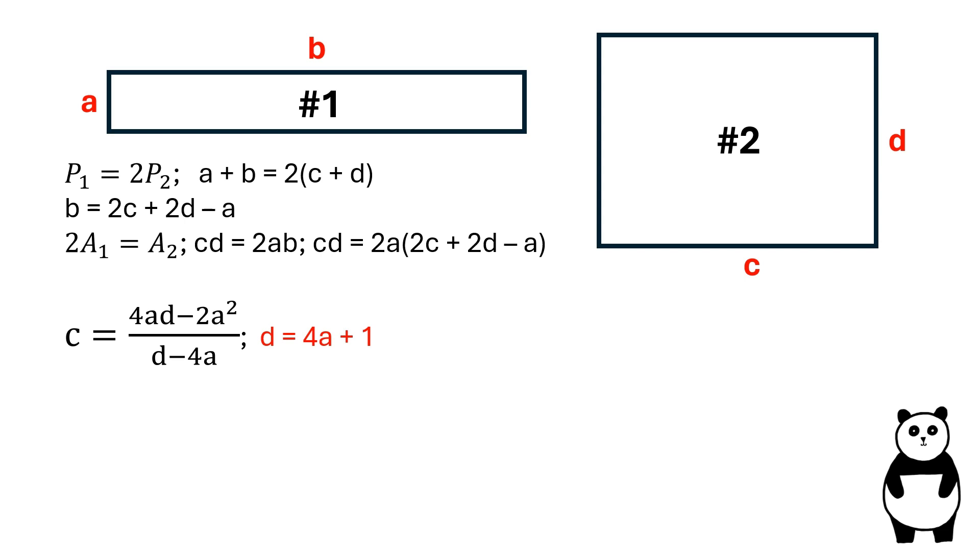Let's substitute the value of D into this equation and solve for C. C is equal to 2A times the sum of 7A plus 2.